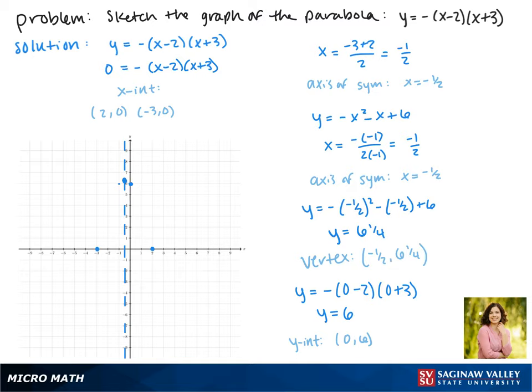Using the symmetry about the vertex, we know that the point (-1, 6) will also be on the parabola, and then here is our parabola.